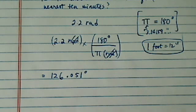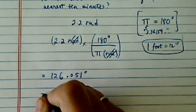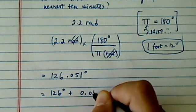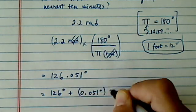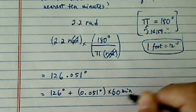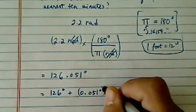Since we are required to round it into the nearest ten minutes, here's what we're going to do. This is 126 degrees plus 0.051 degrees, we're going to time 60 minutes in 1 degree, so degree cancels.